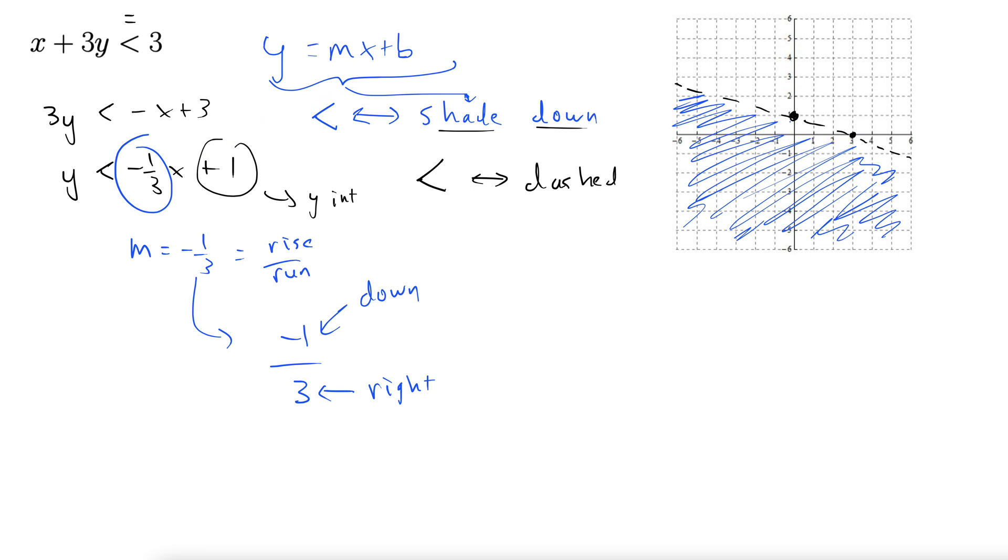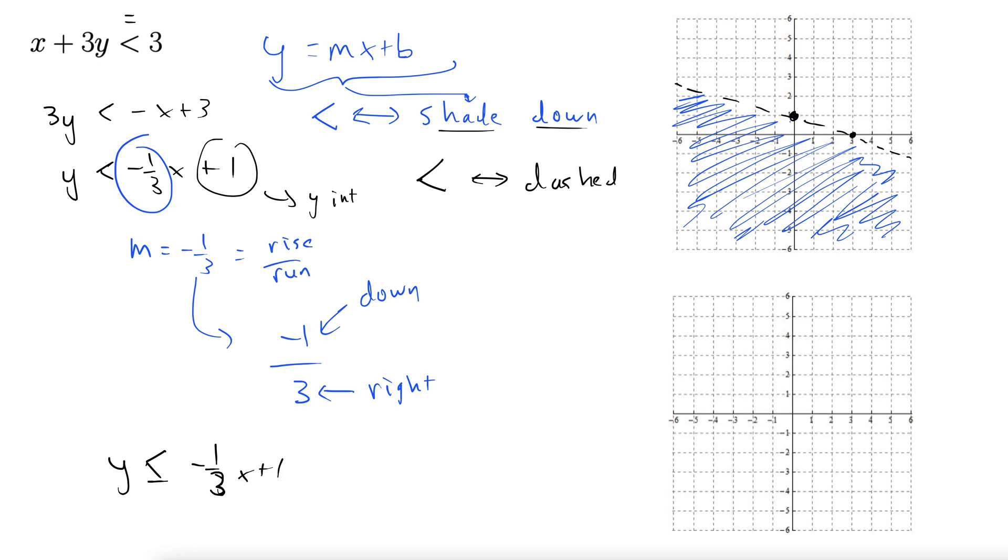Let's just for the sake of completeness examine the sister case here: y less than or equal to negative one third x plus one. You'd have the exact same situation, except now the line would be solid instead of dashed. We still have our y-intercept at one, we go down one and over three, and now since it's less than or equal to, we do a solid line. Then we shade this region down below.